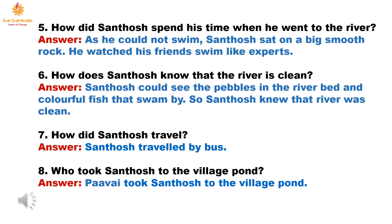Sixth question: How does Santosh know that the river is clean? Answer: Santosh could see the pebbles in the river bed and the colourful fish that swam by, so Santosh knew that the river was clean.